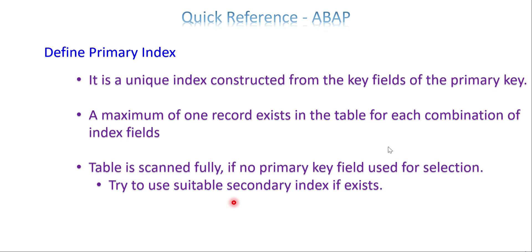It is unique, so you cannot have any duplicates if you create a primary index. Maximum only one record exists in the table for each combination—there are no duplicates. If you have only one primary key, only one material is unique in the entire MARA table.